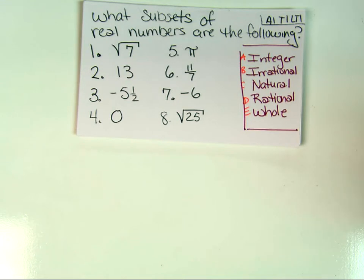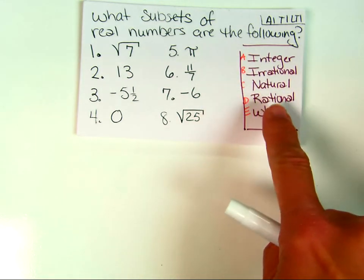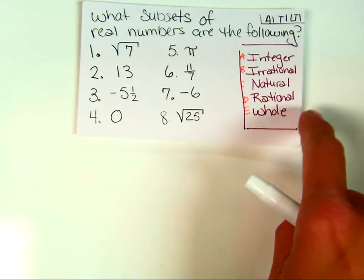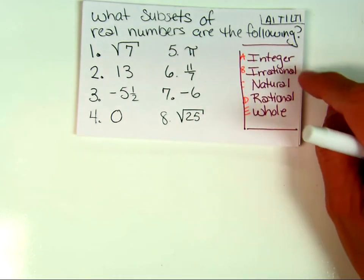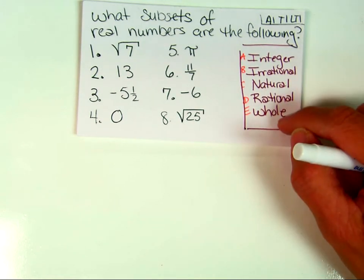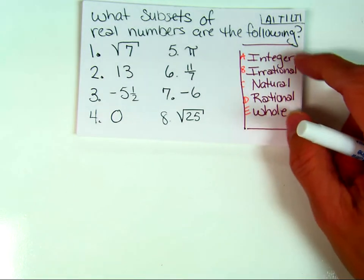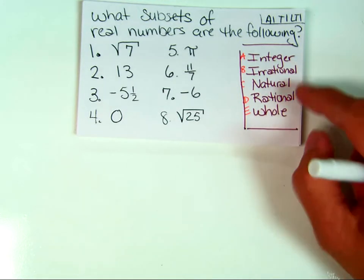The first learning target was identifying the different types of numbers. Numbers are either rational or irrational — it can't be both. 'IR' means not, so if it's rational, it can't be irrational. Natural numbers are just positive whole numbers. Whole numbers add zero; integers add negatives; rational adds fractions. Together, rational and irrational make up real numbers.